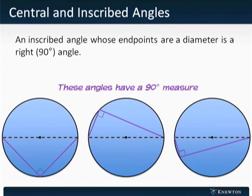Another interesting property of inscribed angles is that any inscribed angle whose endpoints are a diameter is a 90-degree angle. All three of these, because the endpoints of the angle are at the circle's diameter, measure 90 degrees. They're right angles.